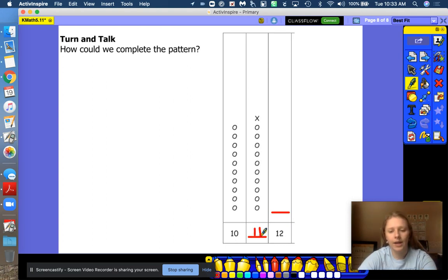11, a 1 and a 1. This 1 represents 10 ones and 1 extra 1. Now let's look at our drawing. They have 10 circles. And then after they got to 10, they switched to X's. So our job is to fill in 12 the same way.